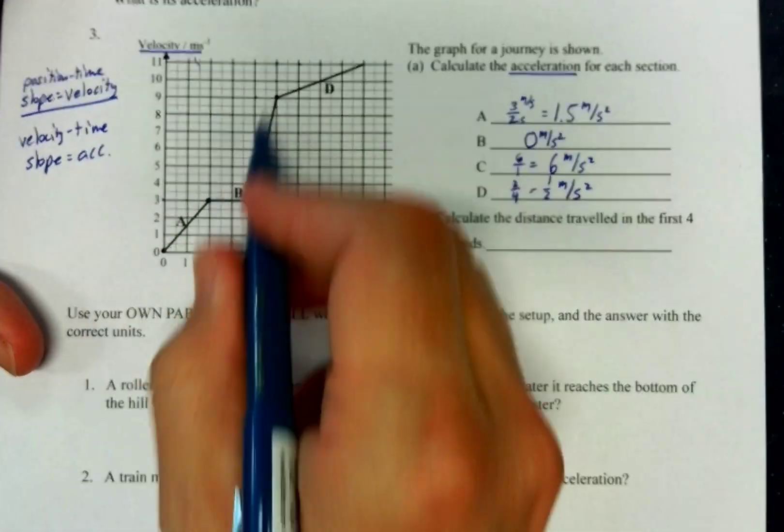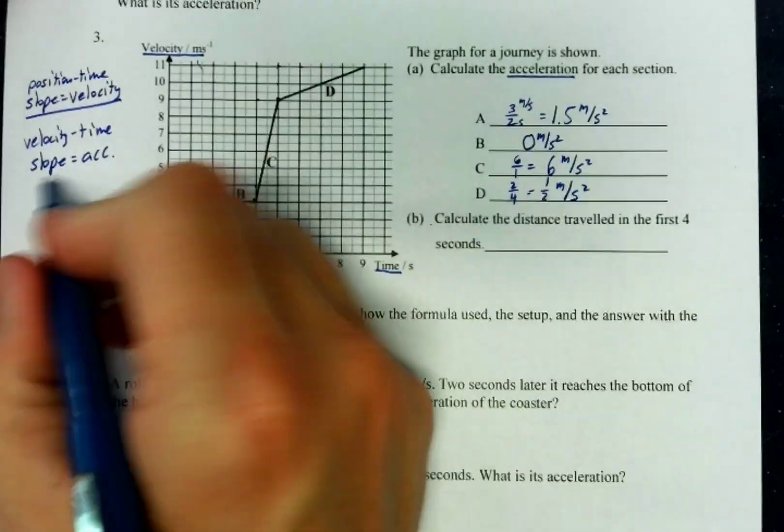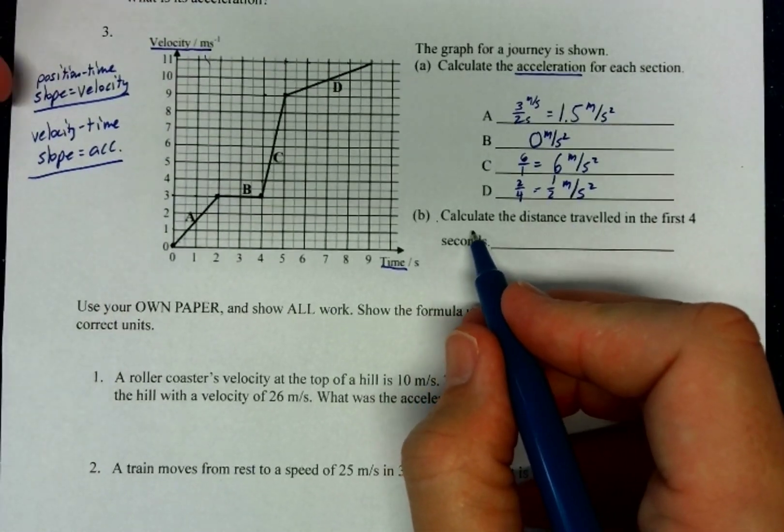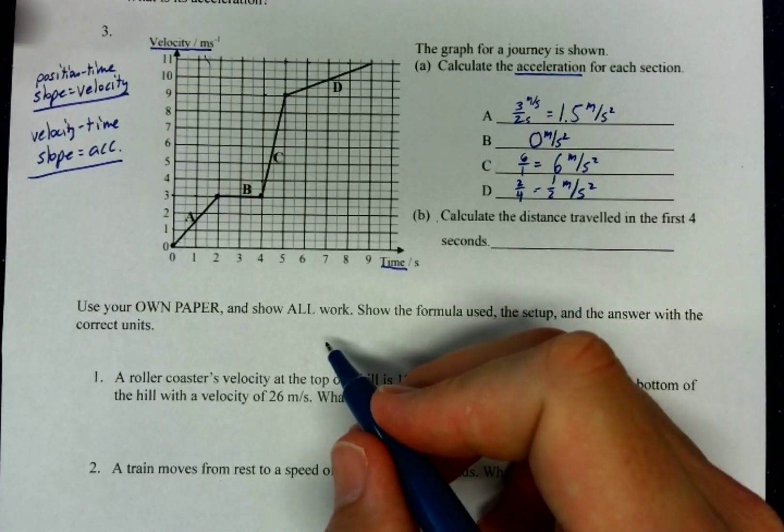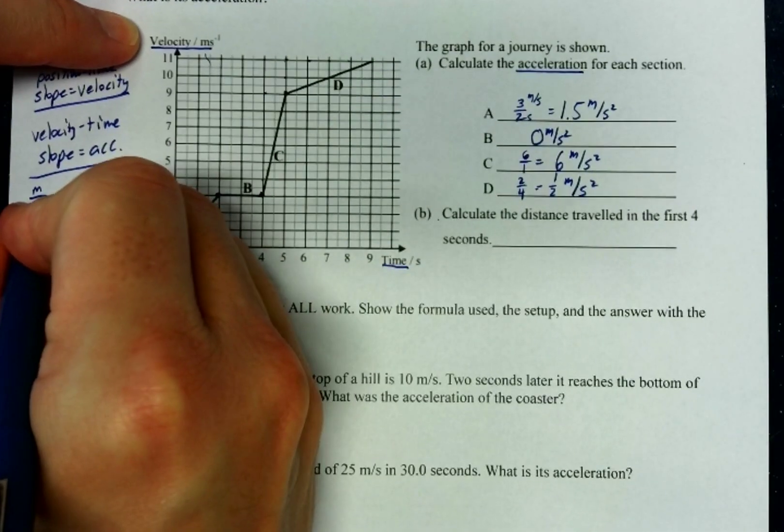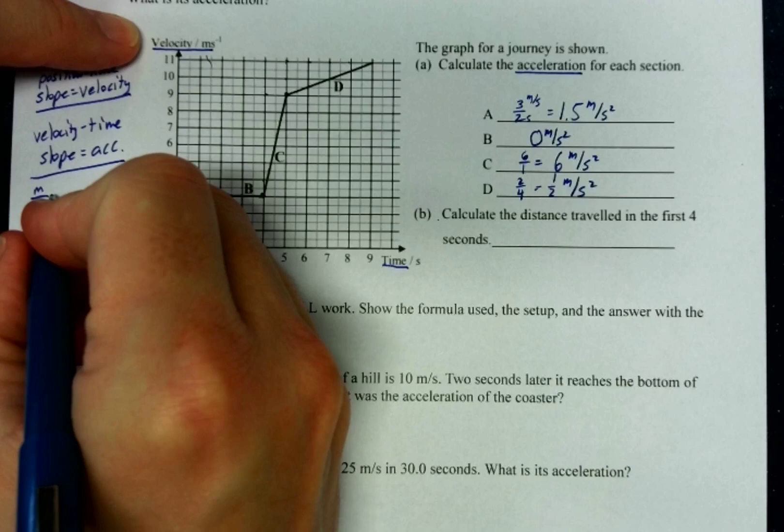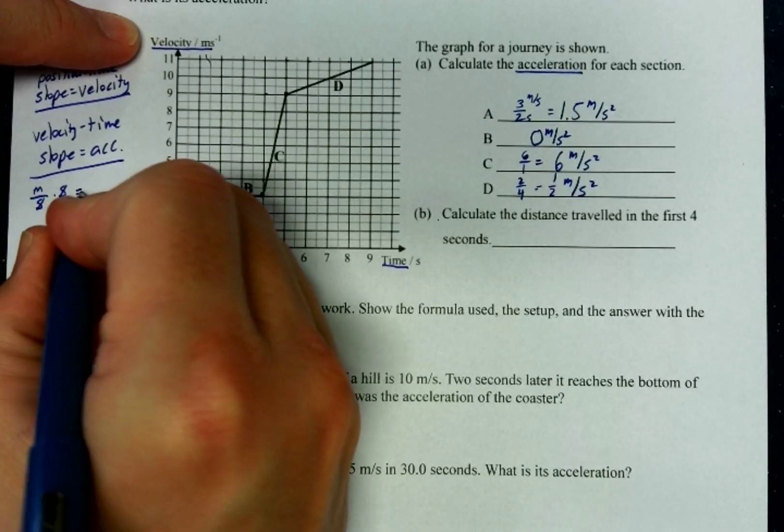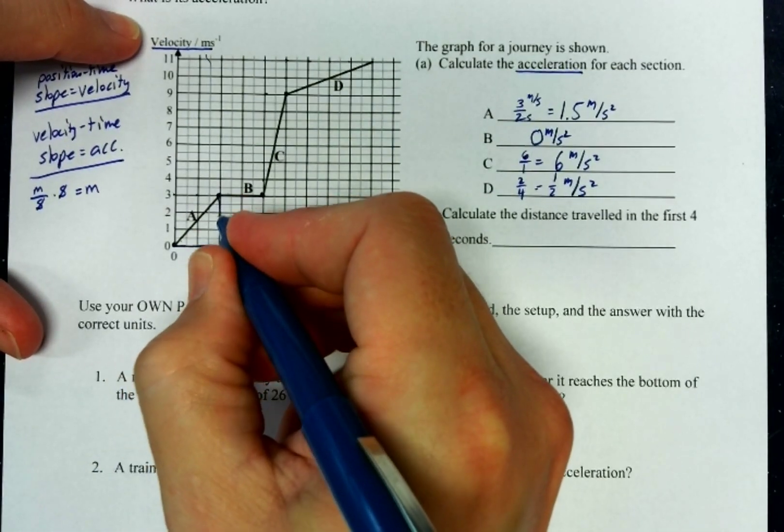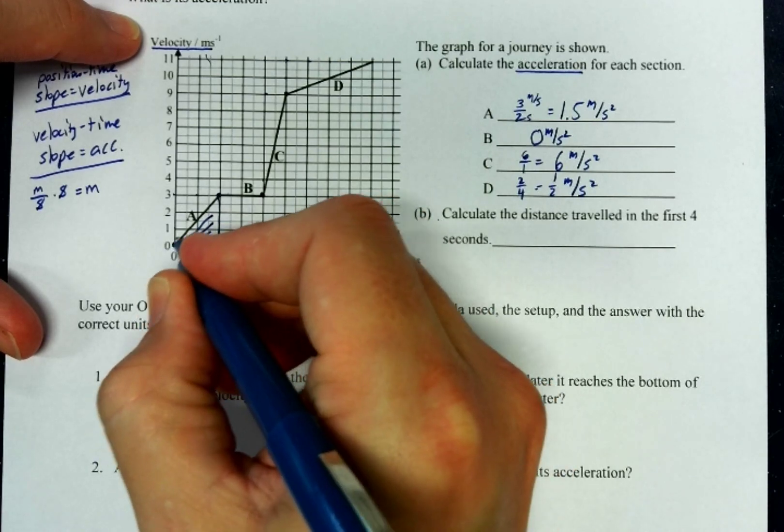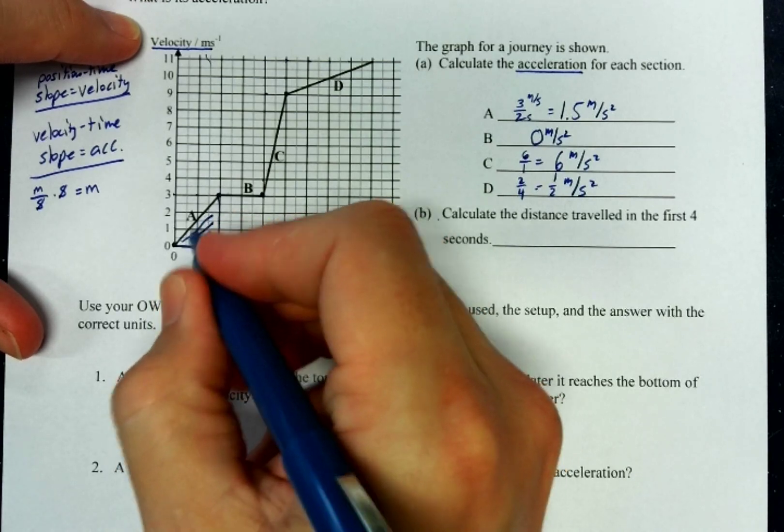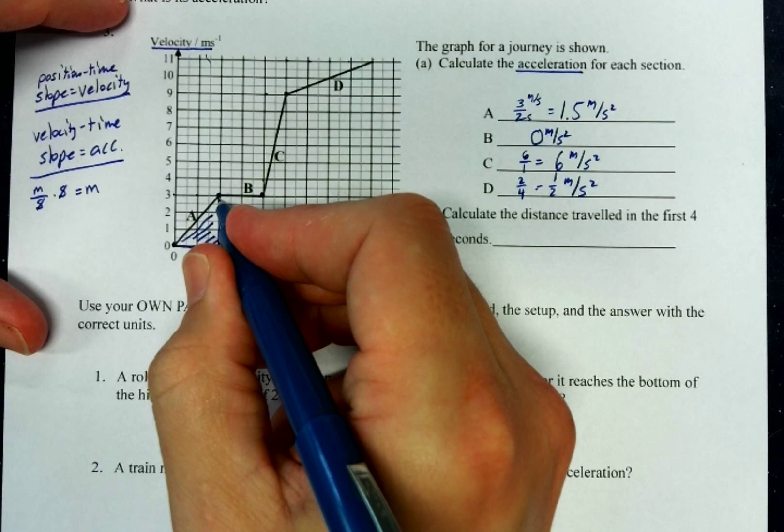And then the run, it went from here to there. That's only over one second. So six over one, and that will be six meters per second squared. D, last one. Again, rise will be two. The run will be one, two, three, four. So two over four, which is of course one-half meter per second squared or 0.5. So that's kind of cool is that we can use the slope of the velocity time graph to get the acceleration.